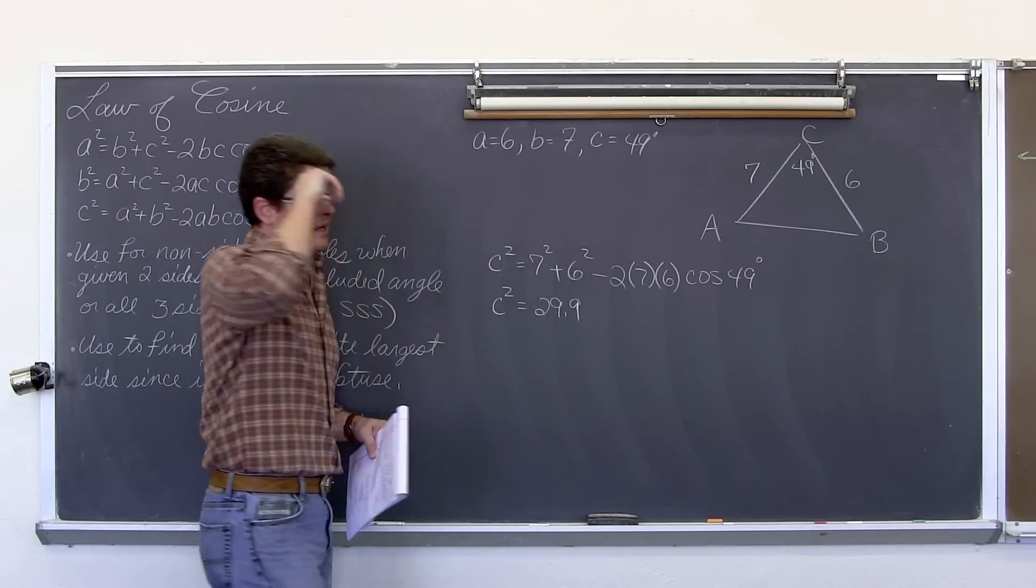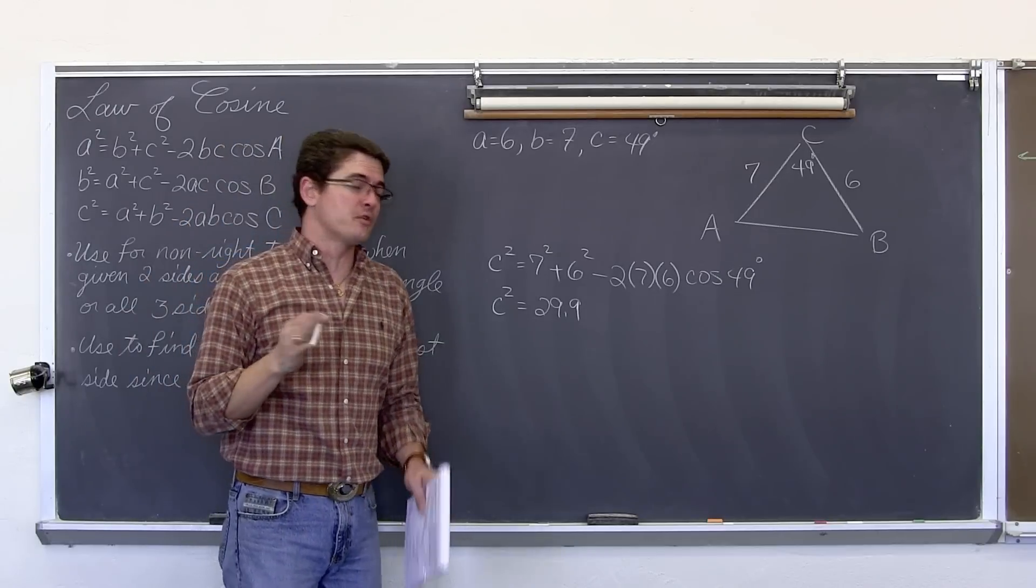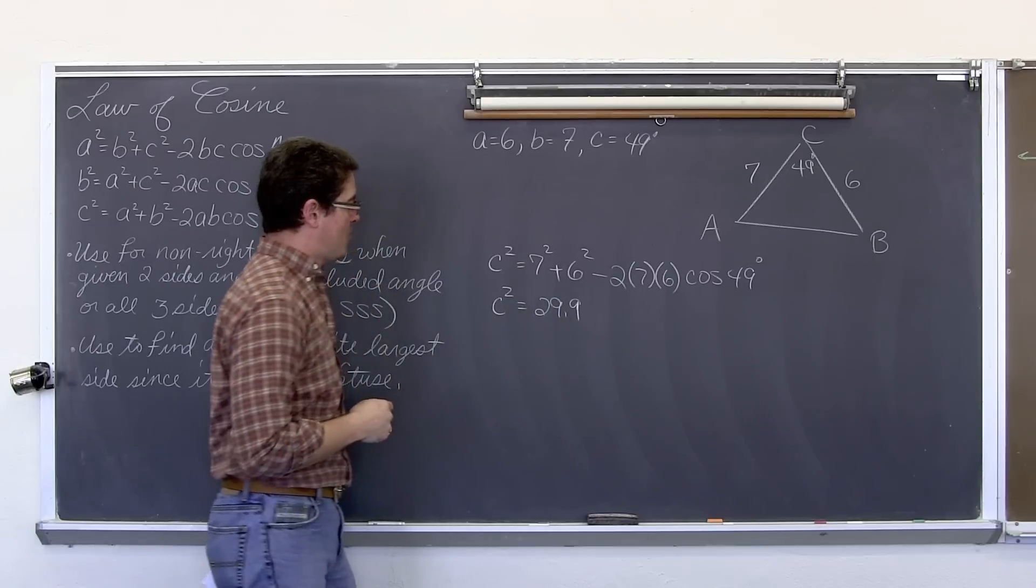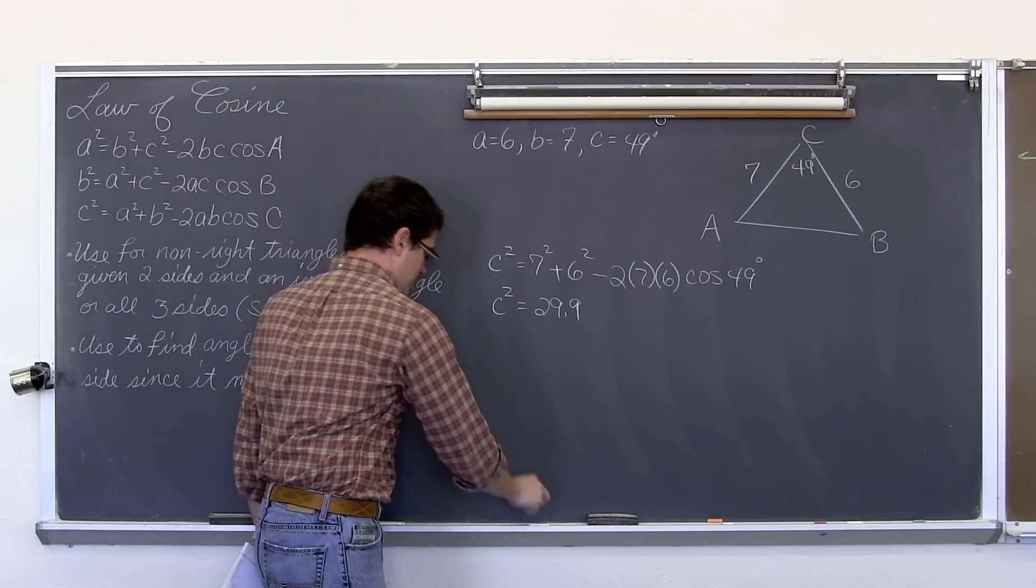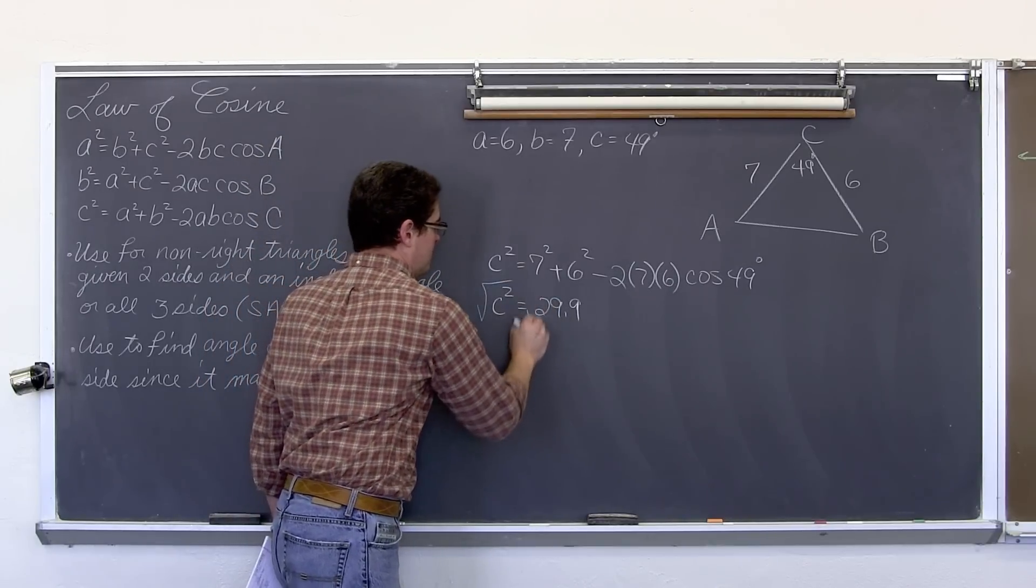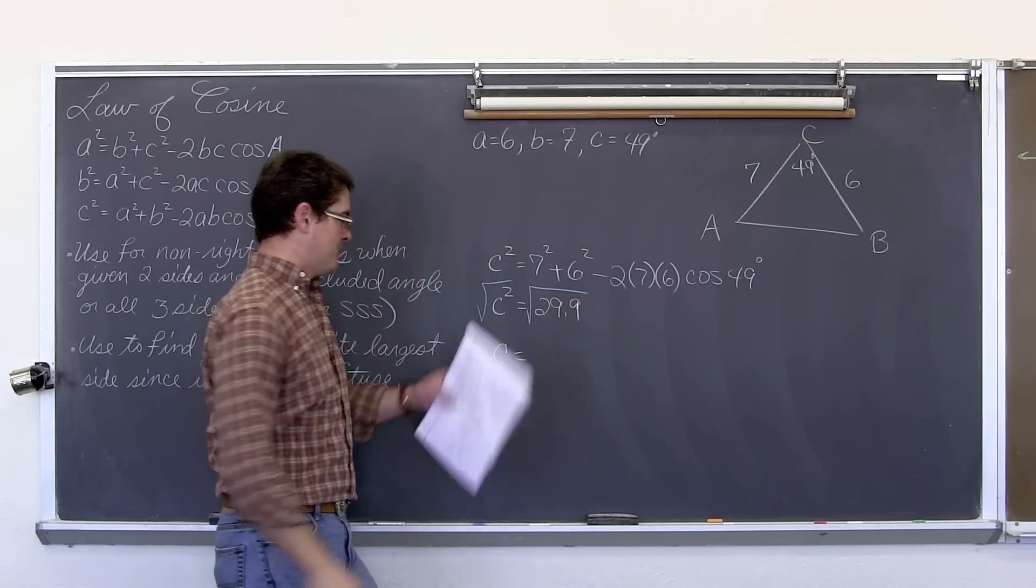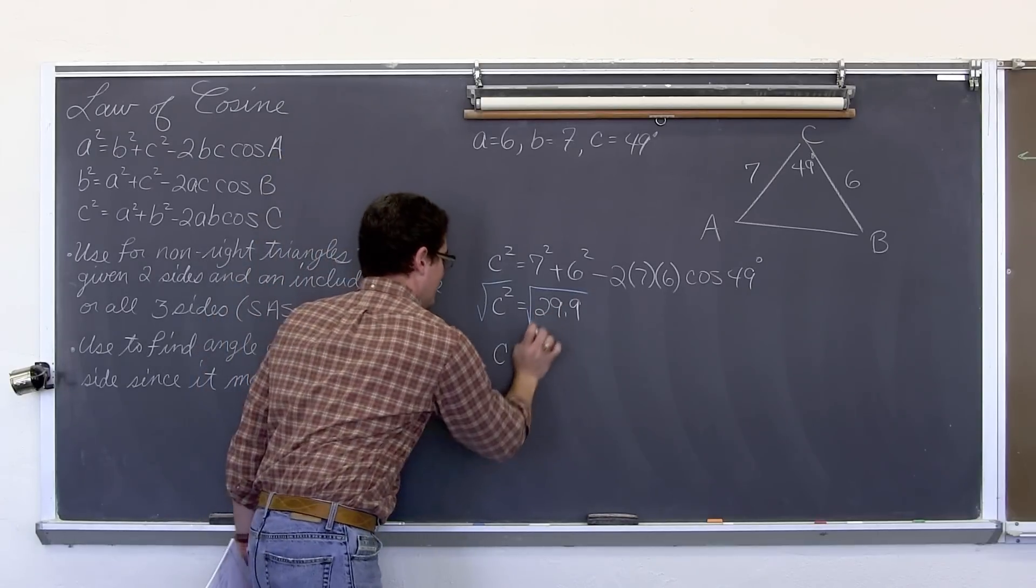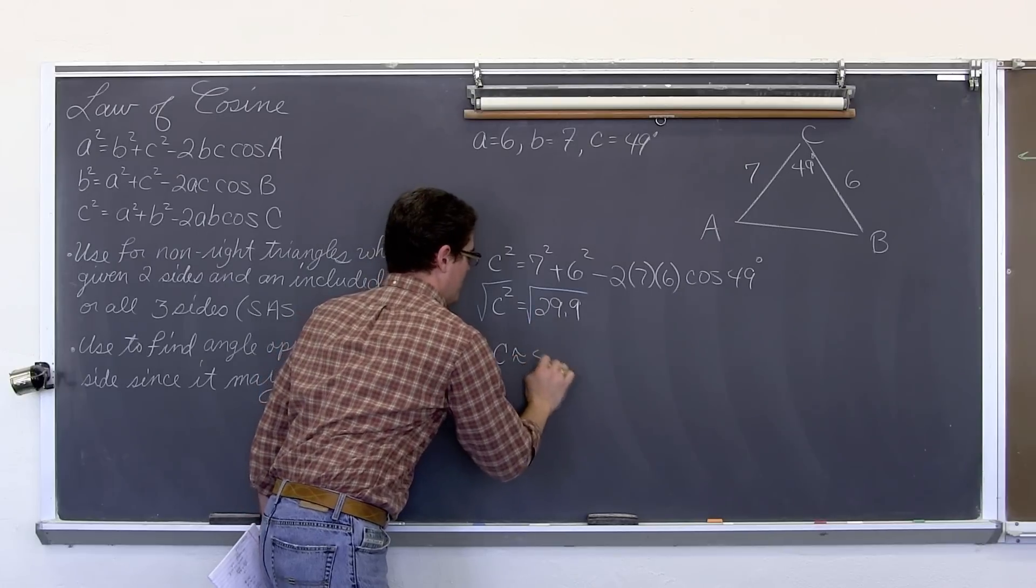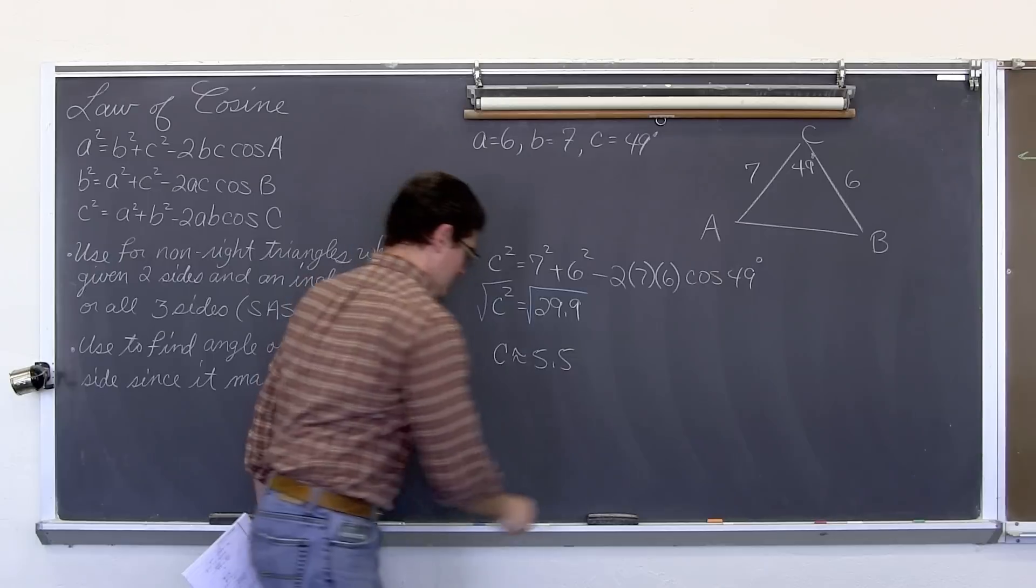You get 29.9. Now that is not the length of C, that is C squared. Don't forget we are going to have to square root both sides of this equation and when we square root both sides we are going to get C, the third side is equal to the square root of 29.9, which is approximately 5.5. So here we go.